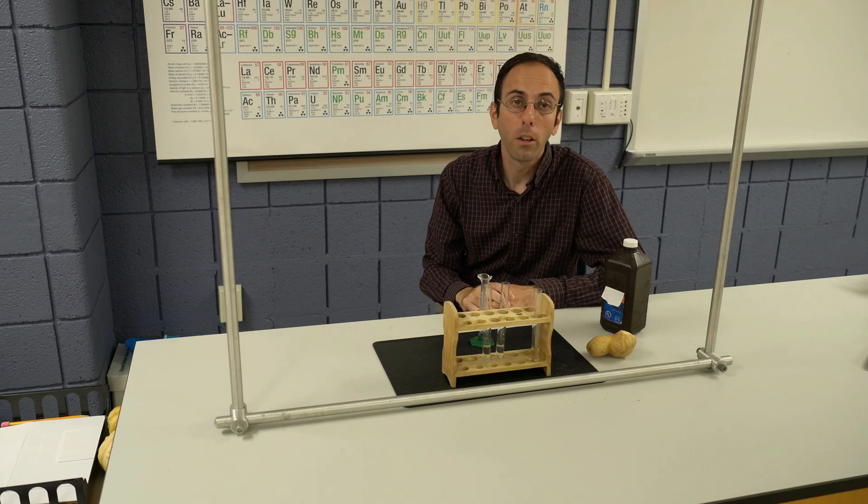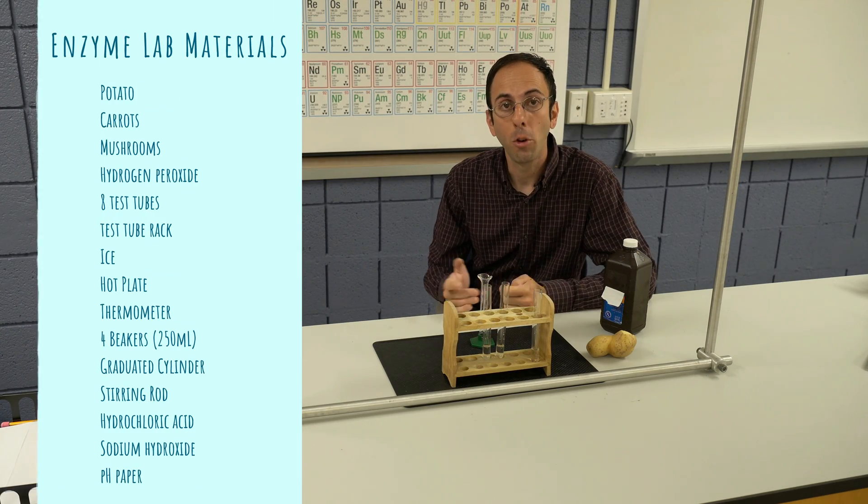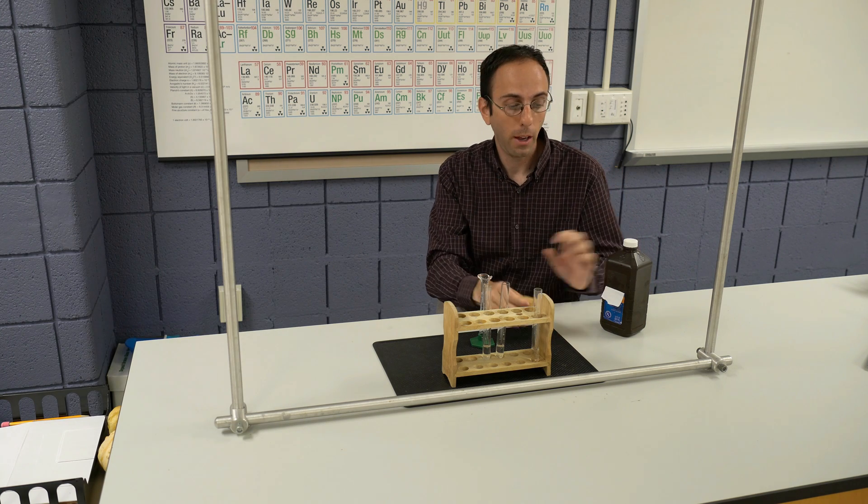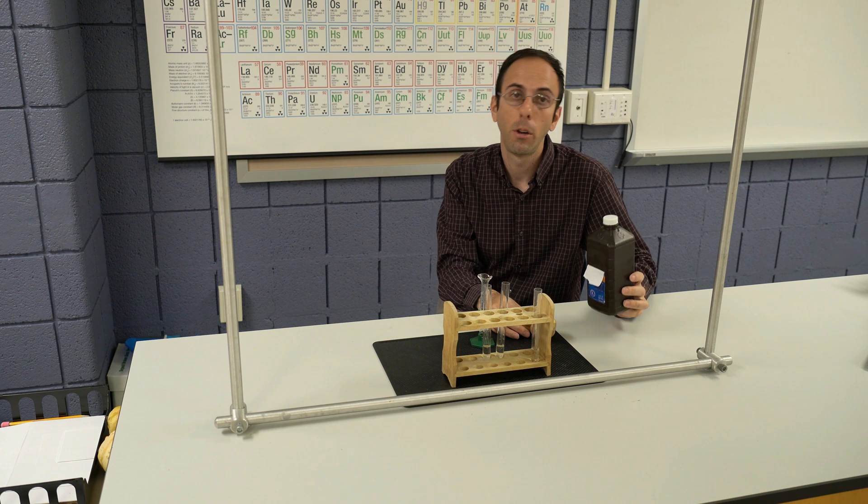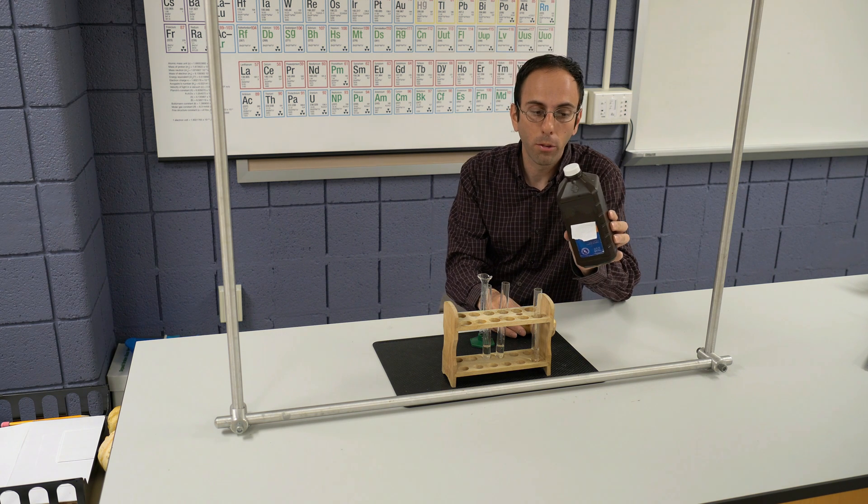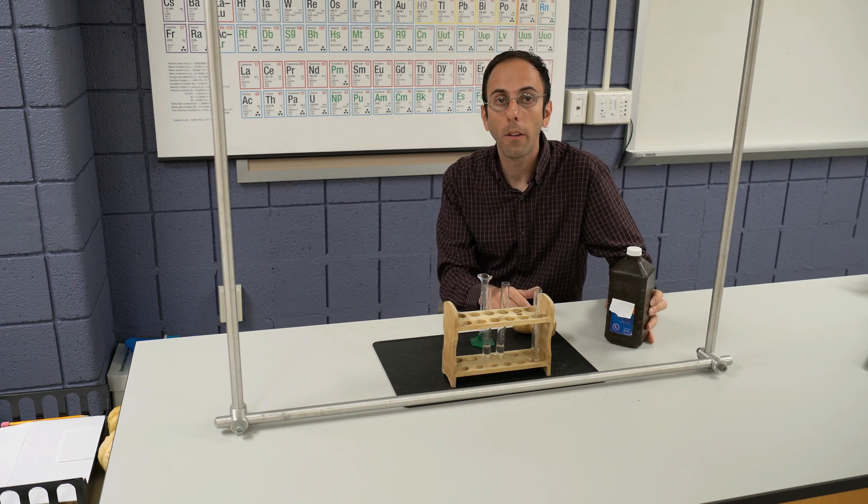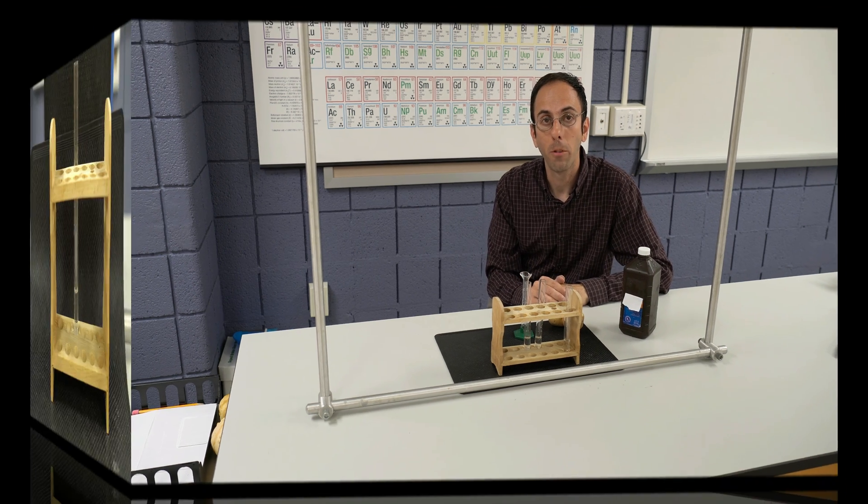Okay, so here we're going to be looking at a catalase enzyme normal reaction. We're looking at catalase contained in this potato and how it reacts to hydrogen peroxide. This is typical store-bought, about 3% hydrogen peroxide. We're going to see how this reacts and look at some observations.